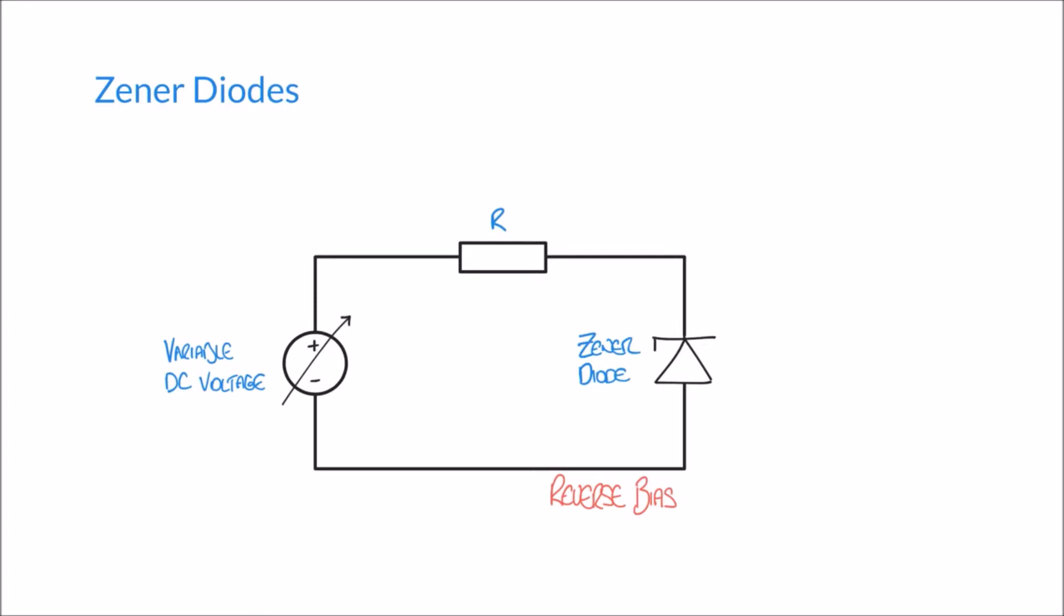What we would find if this was a general diode is that current wouldn't be allowed to flow in this circuit. I could adjust this variable DC voltage as much as I liked but really we wouldn't get much of any current flowing through this diode.